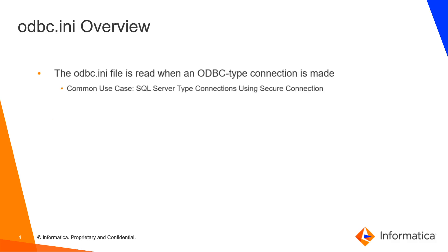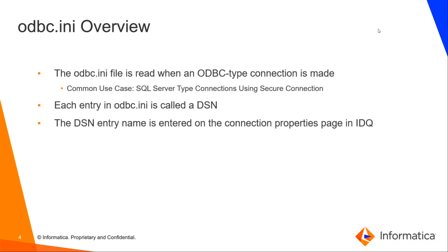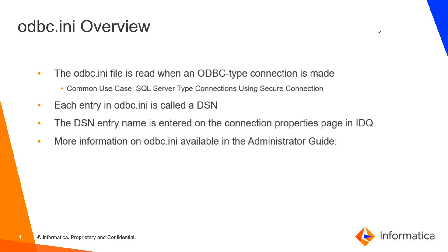The ODBC-INI file is read whenever you make an ODBC-type connection. One common use case is when connecting to Microsoft SQL Server. If the SQL Server database requires a secure connection, then you must use a DSN in ODBC-INI. Each entry in ODBC-INI is called a DSN, and the DSN entry name is entered on the connection properties page in the IDQ admin console. You can find more information on this in our administrator guide.